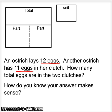How many total eggs are in the two clutches? So a clutch is a nest of eggs. The first one has 12 eggs and the second one has 11 eggs. Your unit box, of course, would be eggs. The question is, how many total eggs are in the two clutches?